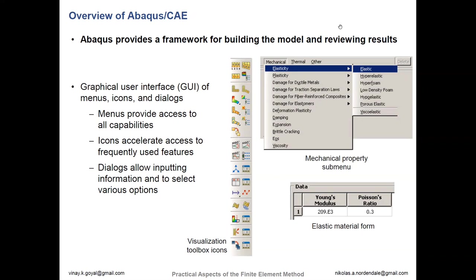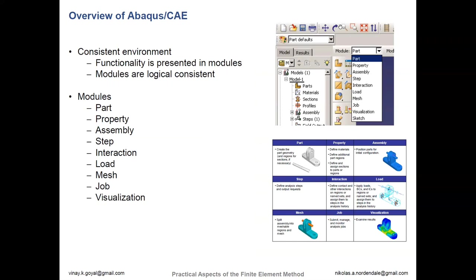The graphical user interface, or GUI, is really helpful in trying to learn how to use Abaqus. There's a very consistent environment — all the different functionality exists within modules. At the top of the viewport, there's something called 'module.' Using the drop-down menu you can see part definitions, properties where you can assign material property definitions, and assembly where you can take multiple parts and assemble them into a 3D coordinate system.